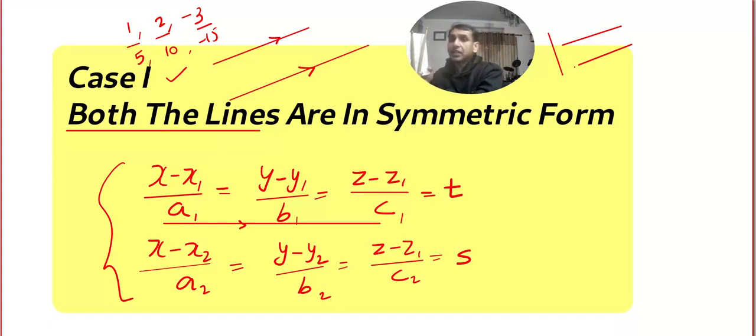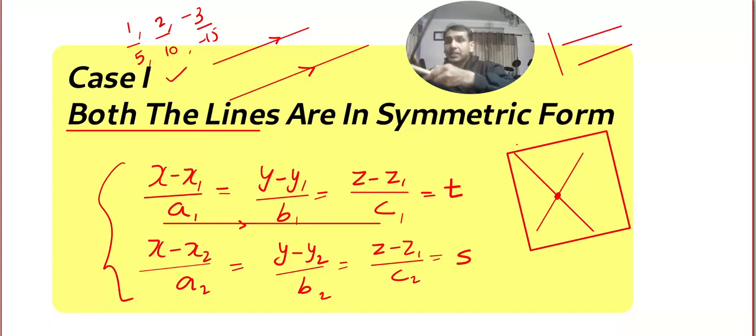Two lines, if they are parallel, they can be always kept in a plane. Now the second possibility is the lines are intersecting. If the lines are intersecting, then there will be a common point. Also, it will be in a common plane, something like one line goes inside the other line. And by the way, lines are like very thin, you have to imagine something like a string. So if the lines are intersecting, then also there will be a common plane.